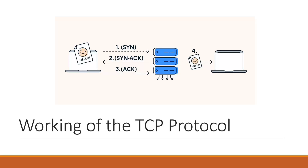This is the sender and this is the receiver. First, the sender sends a message as SYN. After receiving it, the receiver sends back a SYN-ACK message. As the sender receives the SYN-ACK, it further sends an ACK message. This is what is called 3-way handshaking.